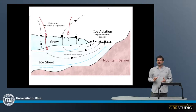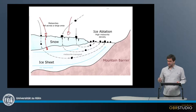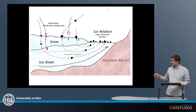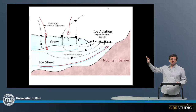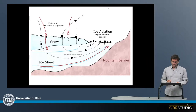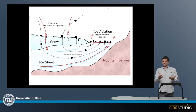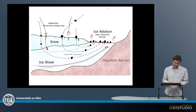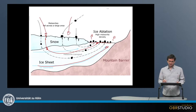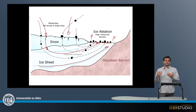The ice sheets in Antarctica are constantly moving, and occasionally they might hit a mountain barrier. The ice movement goes in this direction, hitting the mountain barrier and being pushed up at it. The ice that is pushed up is then slowly ablating, and all the material within the ice is exposed. The meteorite within the ice is transported with this ice movement to this ablation zone and then exposed again at the surface.